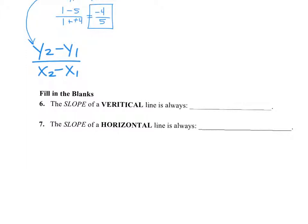Six and seven. The slope of a vertical line is always what? What's the slope of this line? Undefined, right? Remember — vertical, the V is kind of like a U — vertical is always undefined. What's the slope of a horizontal line? Remember horizontal has an O as its second letter. So the slope of a horizontal line will always, always be zero.